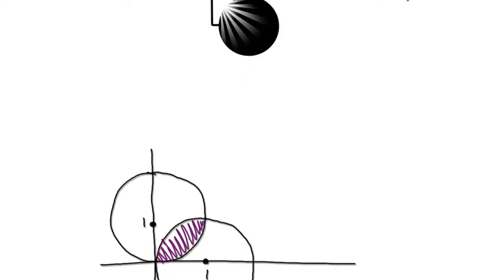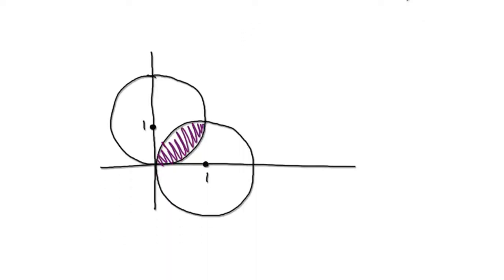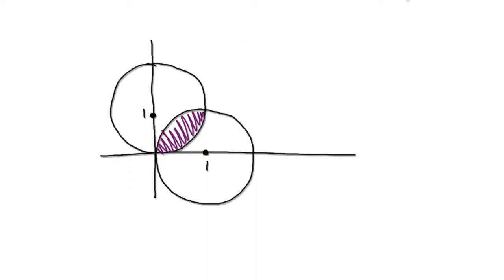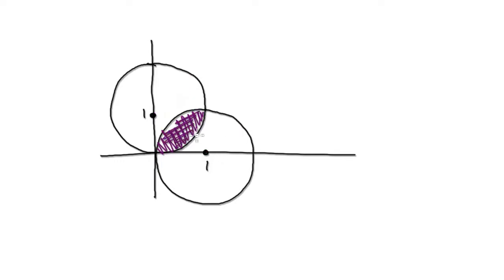Let's give you guys some practice. You've got two circles of radius 1. This one is of radius 1, and this one is of radius 1. Work out this purple area here. Press pause and have a go.